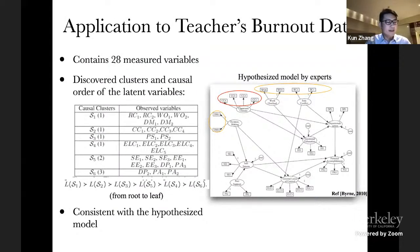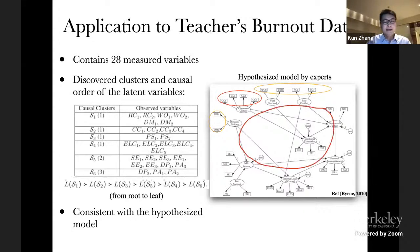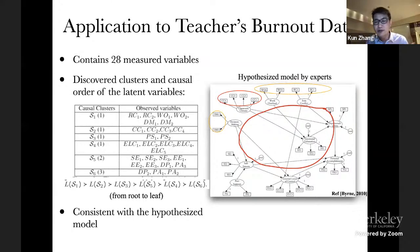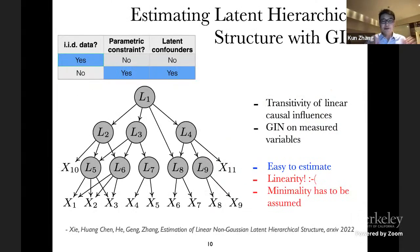Here are some empirical results. We analyze teacher burnout data with this method — this dataset has 28 measured variables and we recovered all the latent variables as shown here. We found that the recovered model together with the causal ordering of the latent variables is consistent with the hypothetical model proposed by domain experts. So you can really recover the latent variables and their relations in this case.